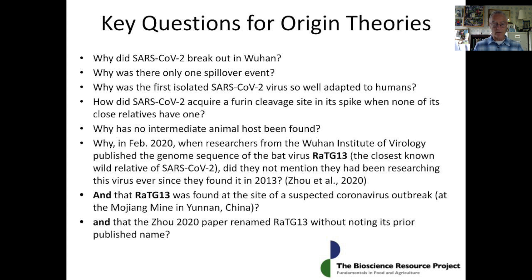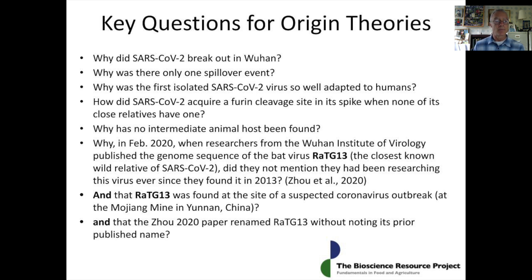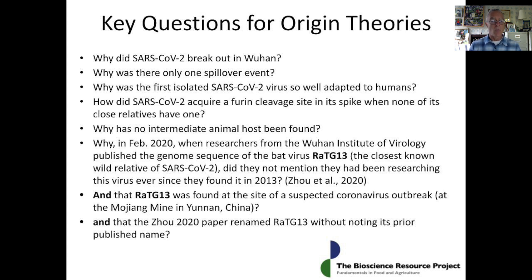This slide lists some key questions to be answered by any origin theory. We lack an explanation of why the virus broke out in Wuhan. We also need to know why there was only one spillover event — a single spillover event is a red flag for a lab escape. Why was the first isolated SARS-2 virus so well adapted to humans? How did SARS-2 acquire a furin cleavage site in its spike protein when none of its close relatives have one? And why has no intermediate animal host been found?